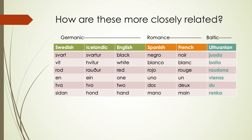For the Baltic language, since we only have one here, we don't really have a way to compare it with others in its subfamily. But we can start looking across these different subfamilies. There's a lot of crossover between subfamilies as well. Some things seem more specific to Germanic, like 'svart' in Swedish and Icelandic. But then words like 'black,' 'blanc,' 'blanc,' and 'balta' have similarities, and in the words for red, one, and two, there are a lot of similarities across all six languages.